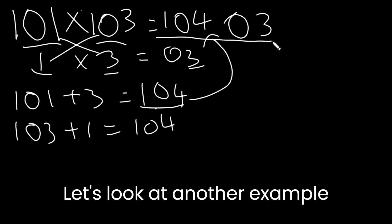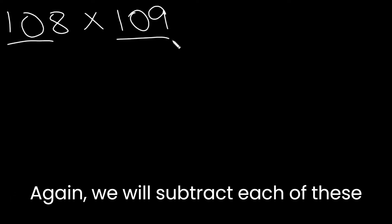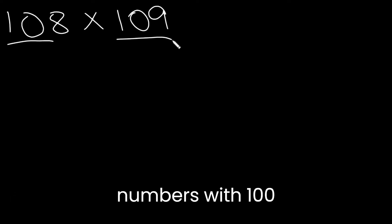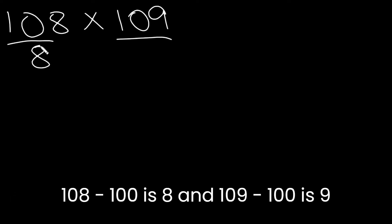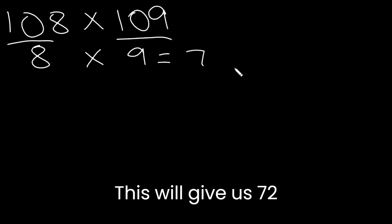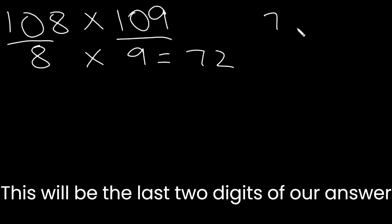Let's look at another example. Let's try 108 times 109. Again, we're going to subtract each of these numbers with 100. 108 minus 100 is 8. And 109 minus 100 is 9. You have to multiply these two. This will give us 72. This will be the last two digits of our answer.